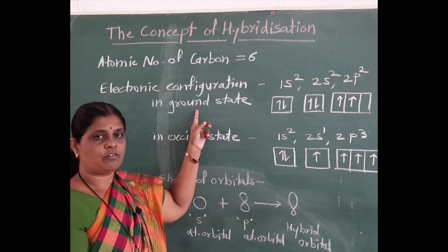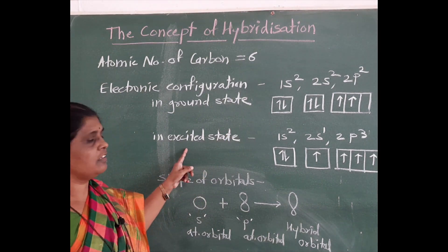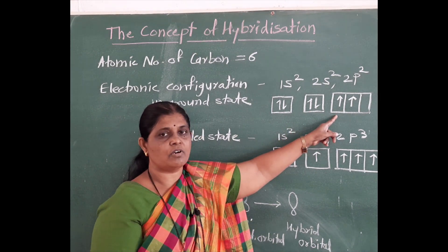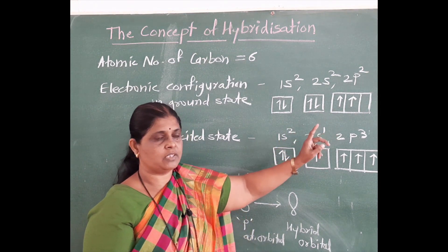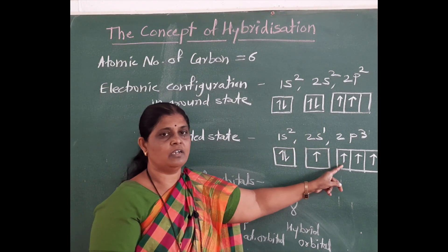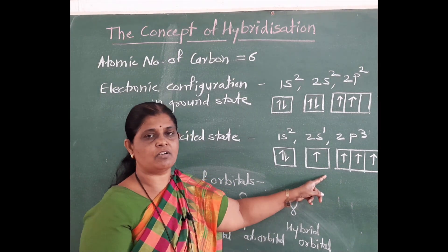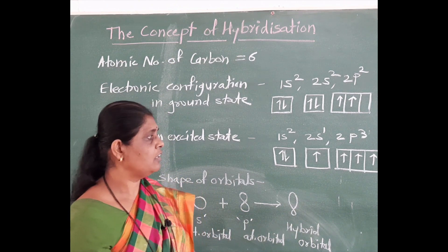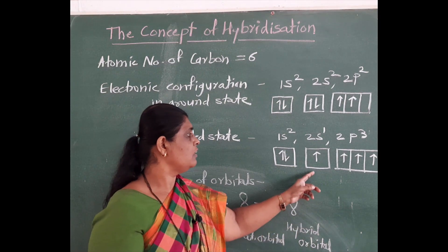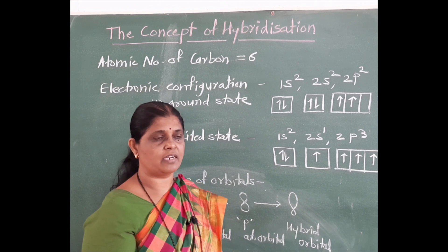That is the electronic configuration in the ground state. In the excited state, one electron from the 2s atomic orbital migrates towards the 2p atomic orbital, and the electronic configuration becomes 1s2, 2s1 and 2p3. There are four unpaired electrons in the outermost orbit, and those electrons are involved in bonding. Therefore, the valency of carbon is 4, which is shown in the case of organic compounds.